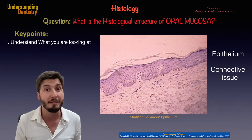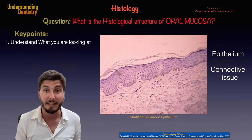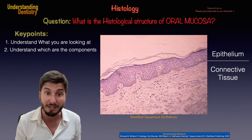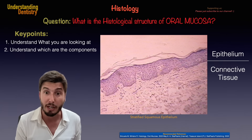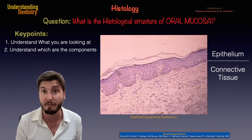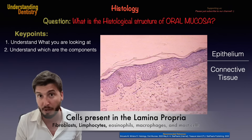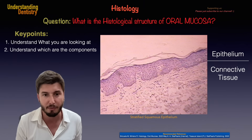In many sites, we don't have the submucosa, so the lamina propria would be bound into muscles and even bones, depending on the site. This leads us to the second key point: we need to understand the components of those tissues. The epithelial tissue has four layers, and the lamina propria — the connective tissue — is composed by different types of cells: fibroblasts, lymphocytes, eosinophils, and even macrophages.